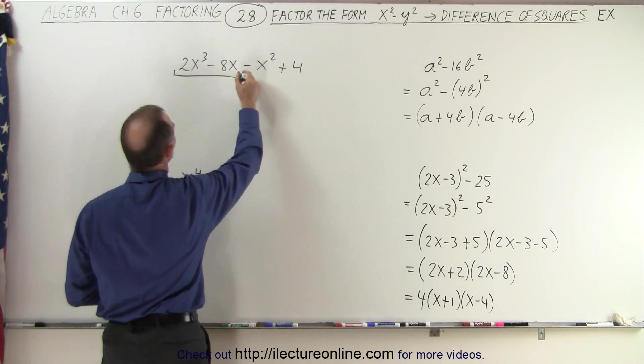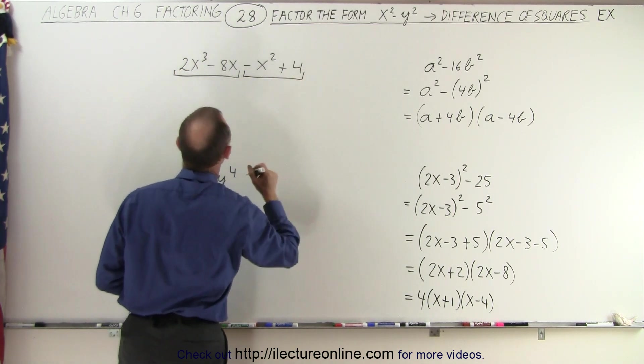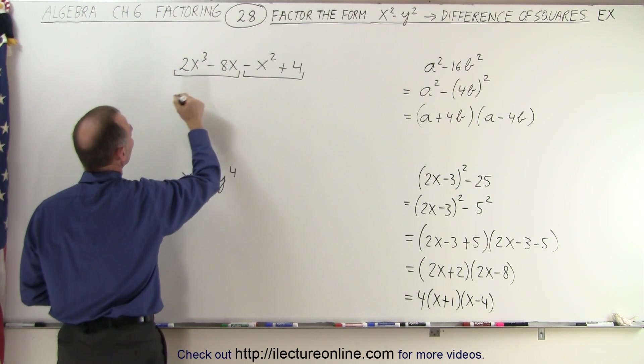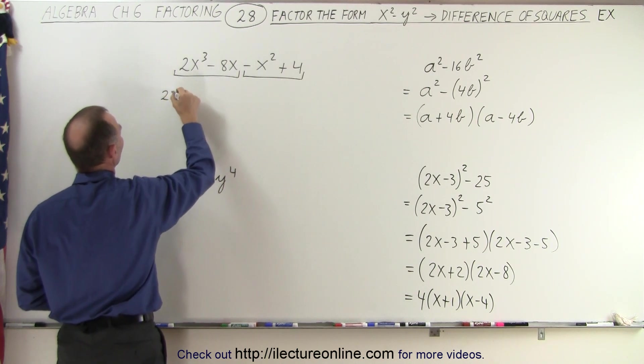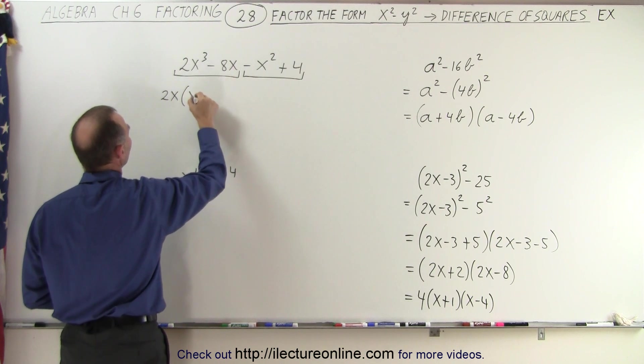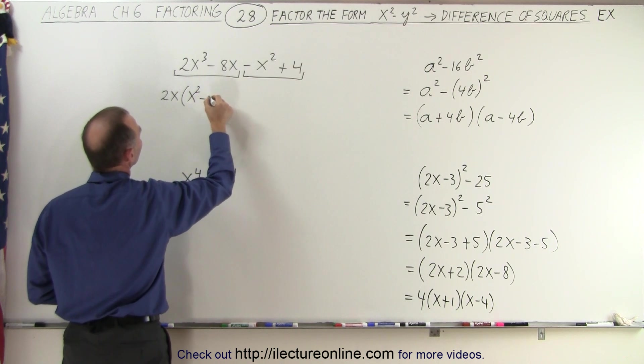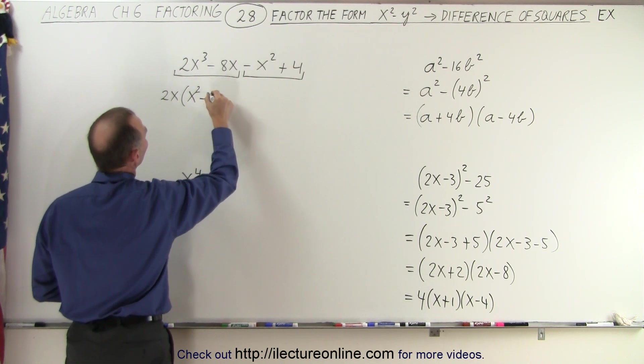So here we can see the common factor here would be 2 times x, so we have 2 times x, times what's left would be x² minus 4.